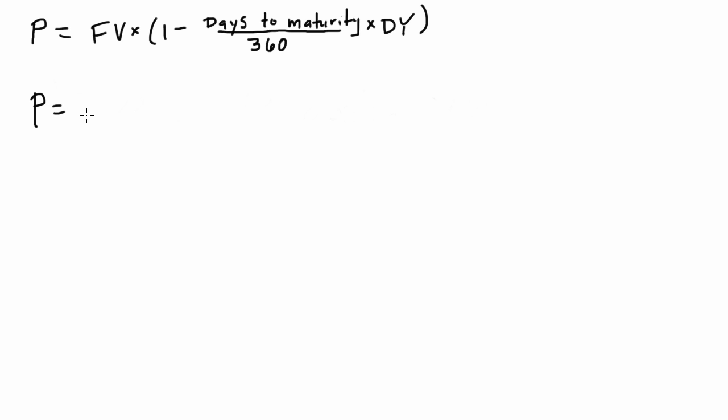We know what the face value is, that's $100. Plugging in the numbers, there's 180 days to maturity. We're given that the discount yield of this T-bill is 5%.